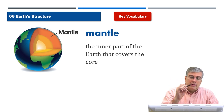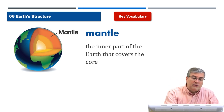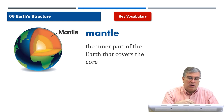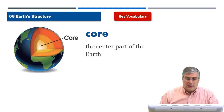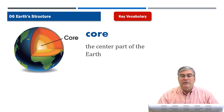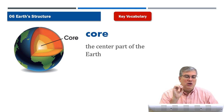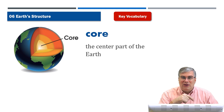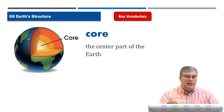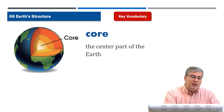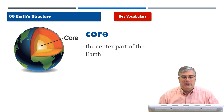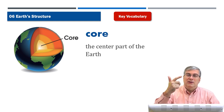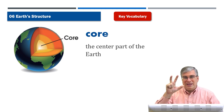'Mantle' is underneath the crust — the inner part of the earth that covers the core. So we have three parts: the crust on the outside, the mantle in the middle, and the core at the center. 'Core' is the center part of the earth — the middle. It's very hot. Nobody has ever been to the core — it's too deep to drill or dig that far. The most drilling ever done has barely scratched the crust.